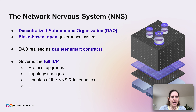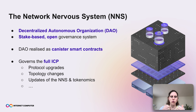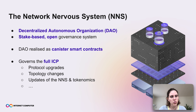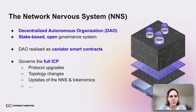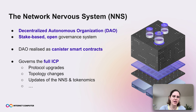The Network Nervous System is a so-called DAO, or decentralized autonomous organization. In particular, it is stake-based, so the more tokens someone has, the more voting power they have. It is also an open governance system, meaning that everyone can become a participant and contribute to governance. In terms of architecture, the DAO is realized itself as canister smart contracts. The NNS — the Network Nervous System — governs really the full Internet Computer.